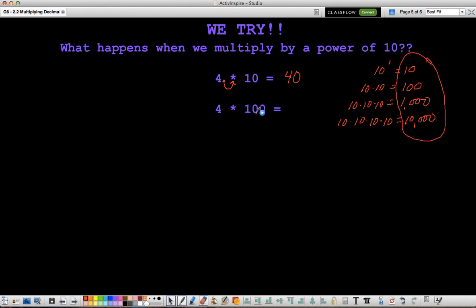So with 4 times 100, again, I have 4, and the decimal's here. So I move it twice to the right, because there's two zeros, because it's times 10 two times. So it's like 4 times 10 times 10. So I move it twice to the right, and then I add two zeros, and I get 400.